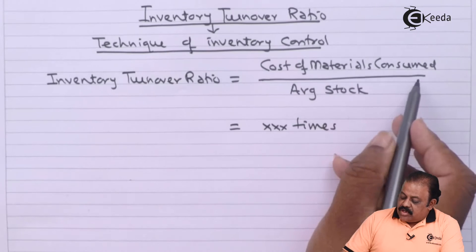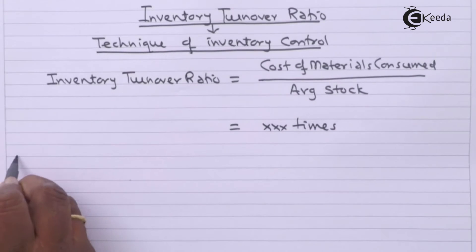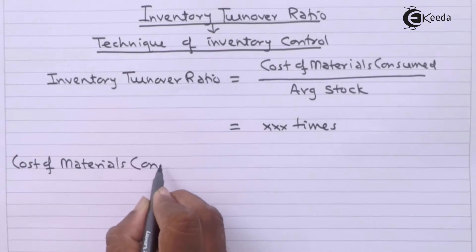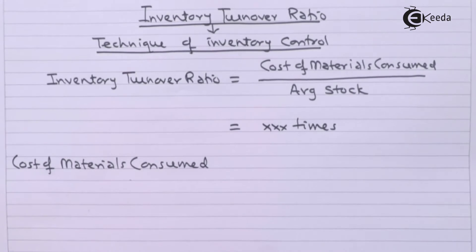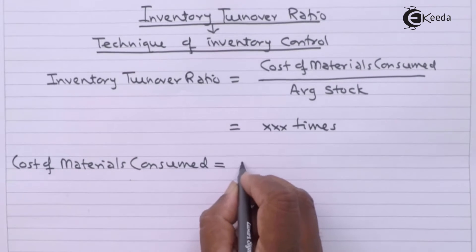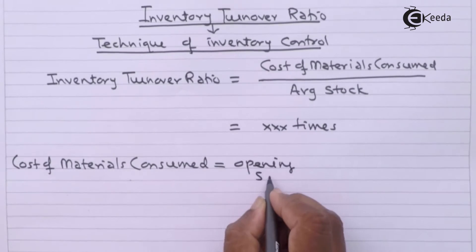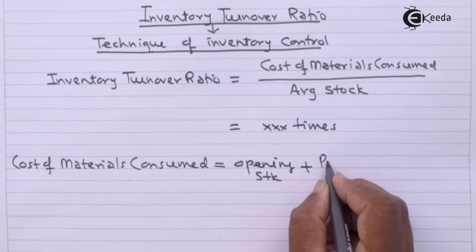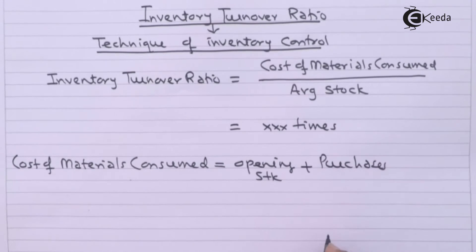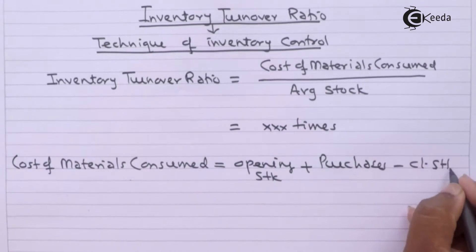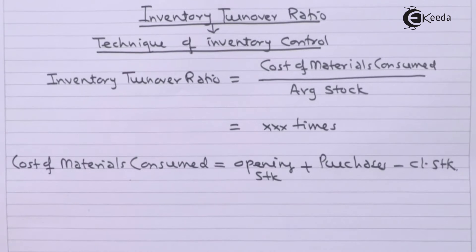The formula for cost of material consumed is: opening stock plus purchases of material minus closing stock of material. Now, what is the average stock?